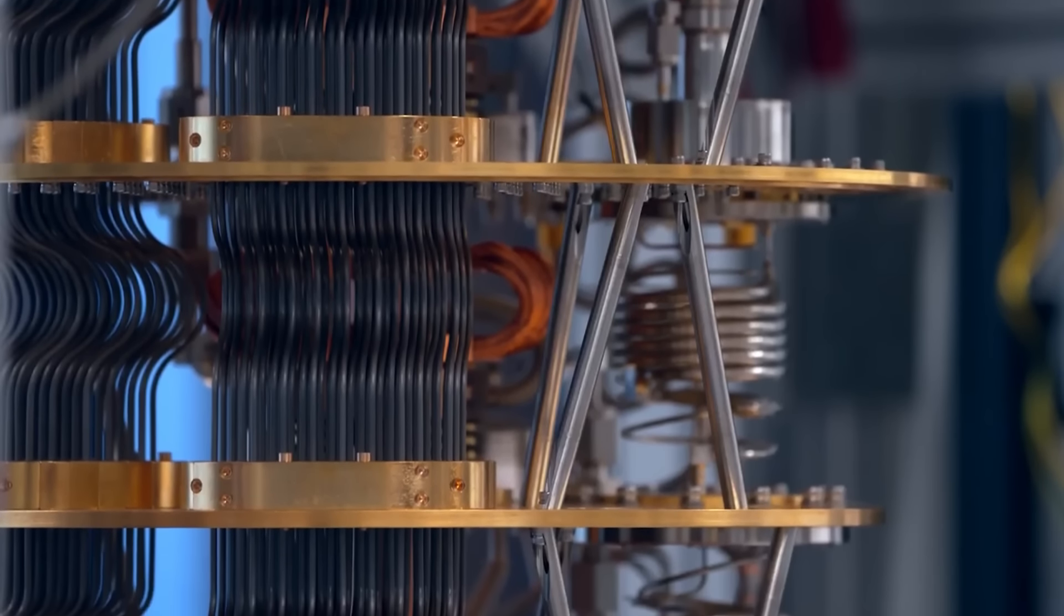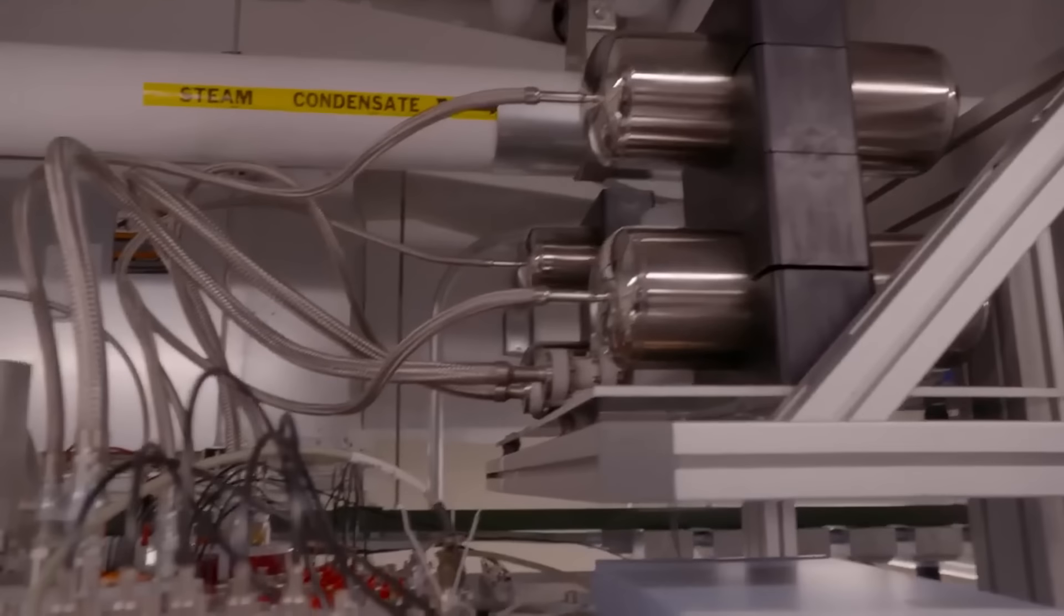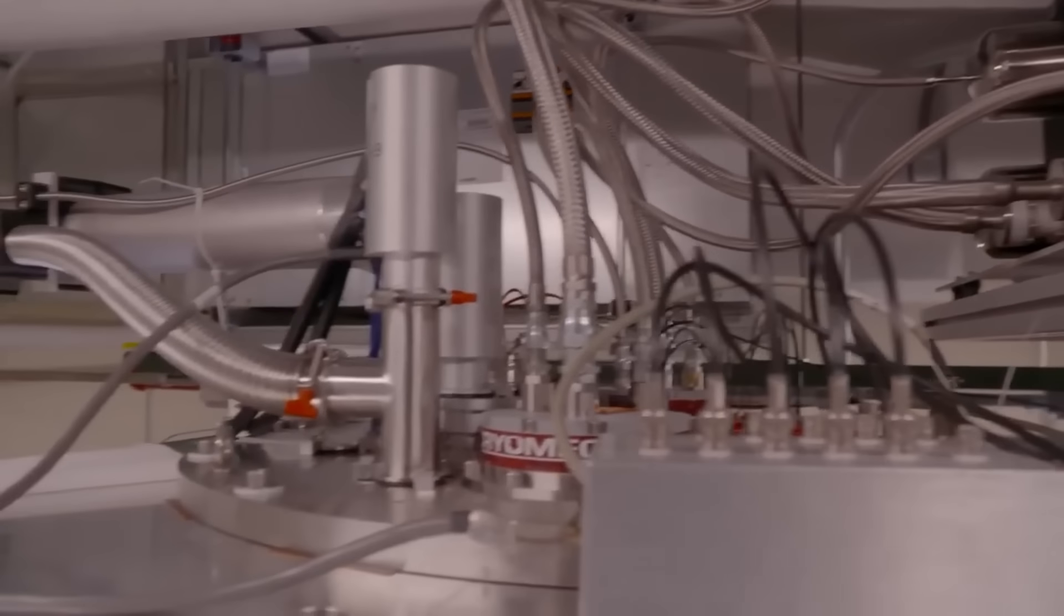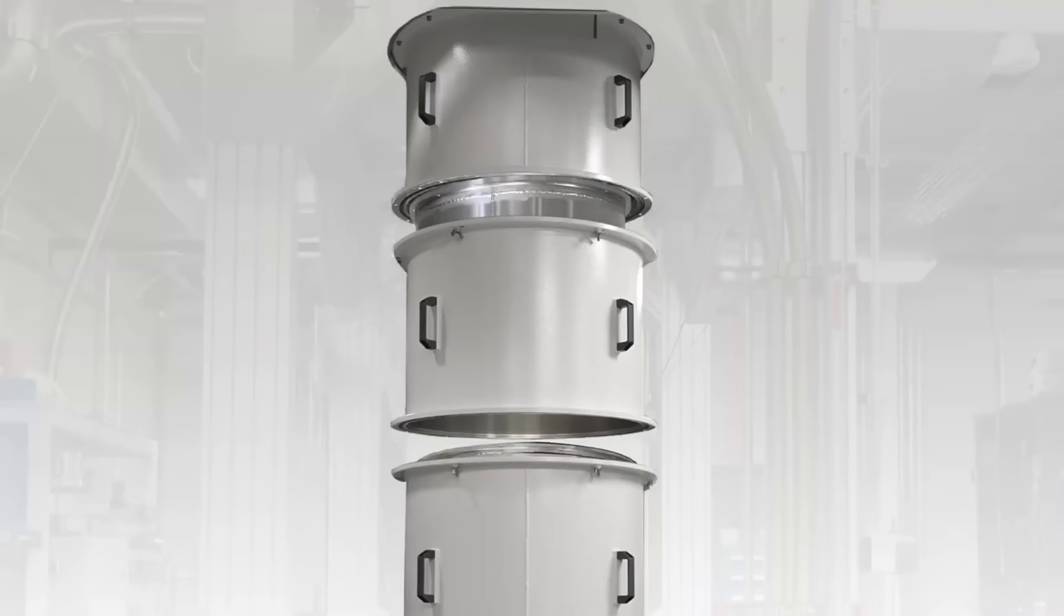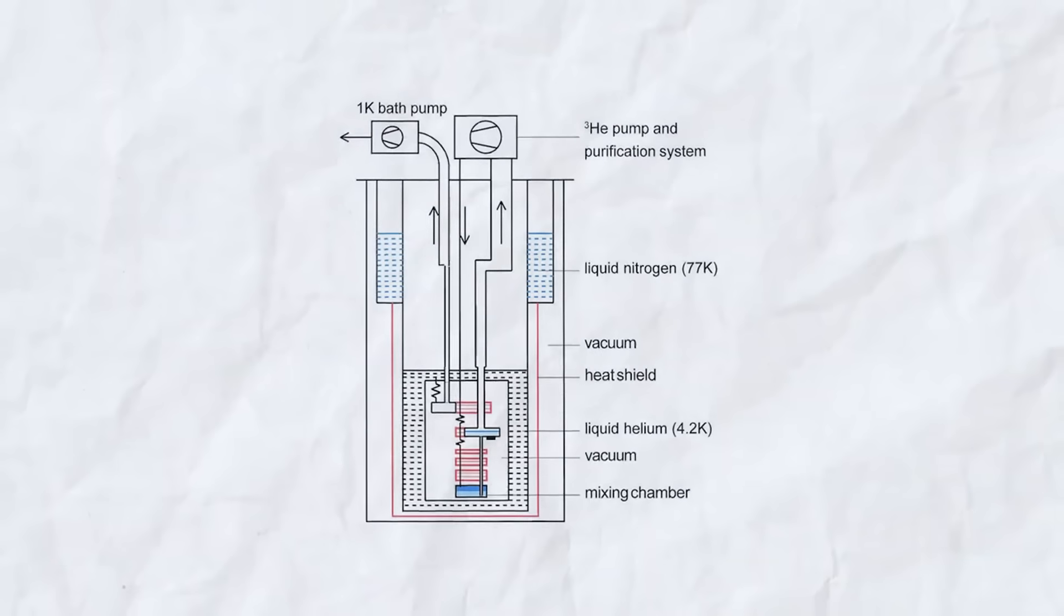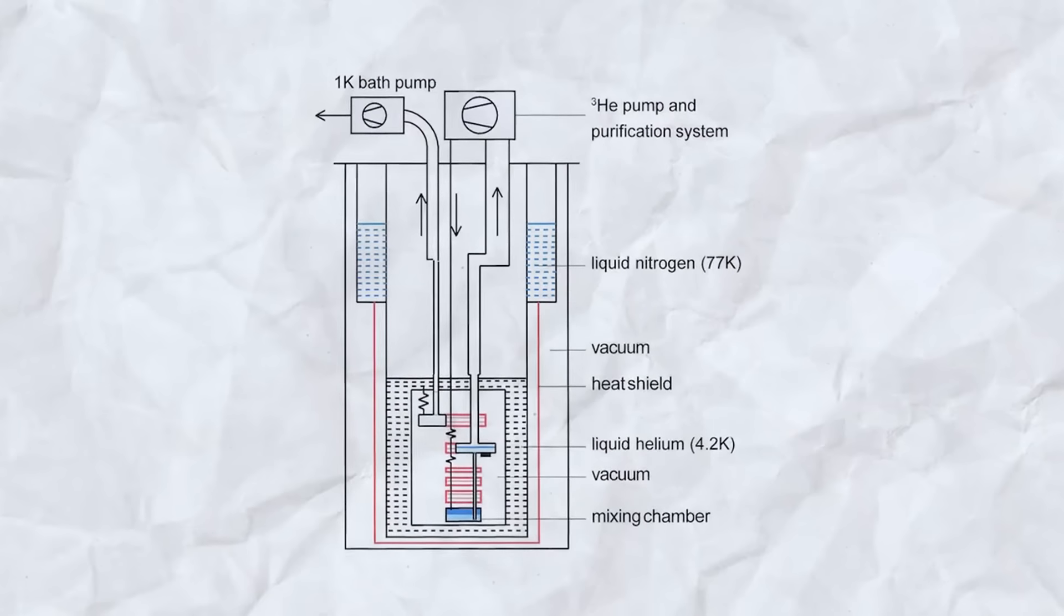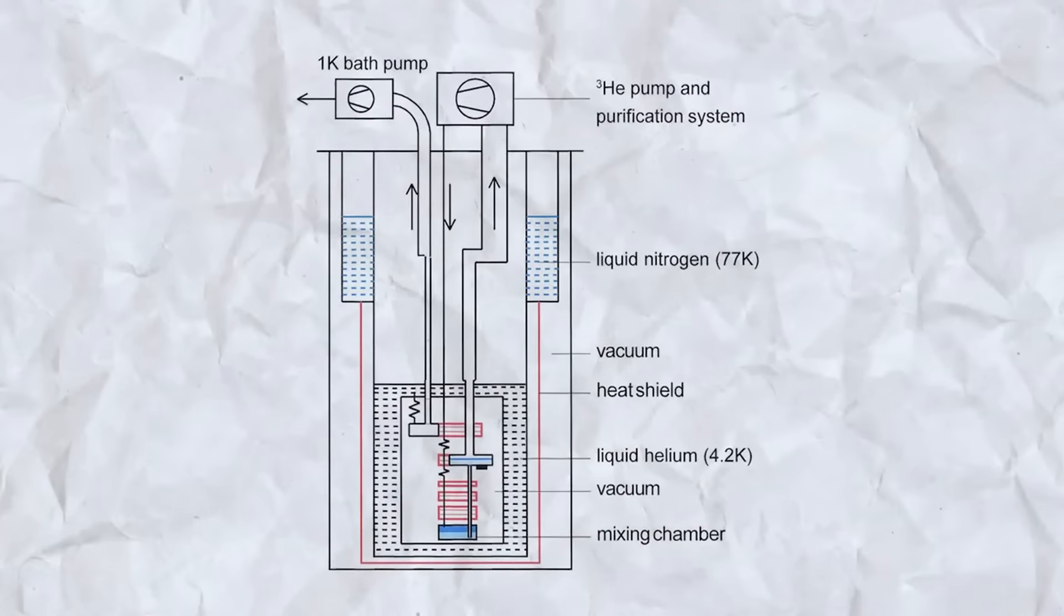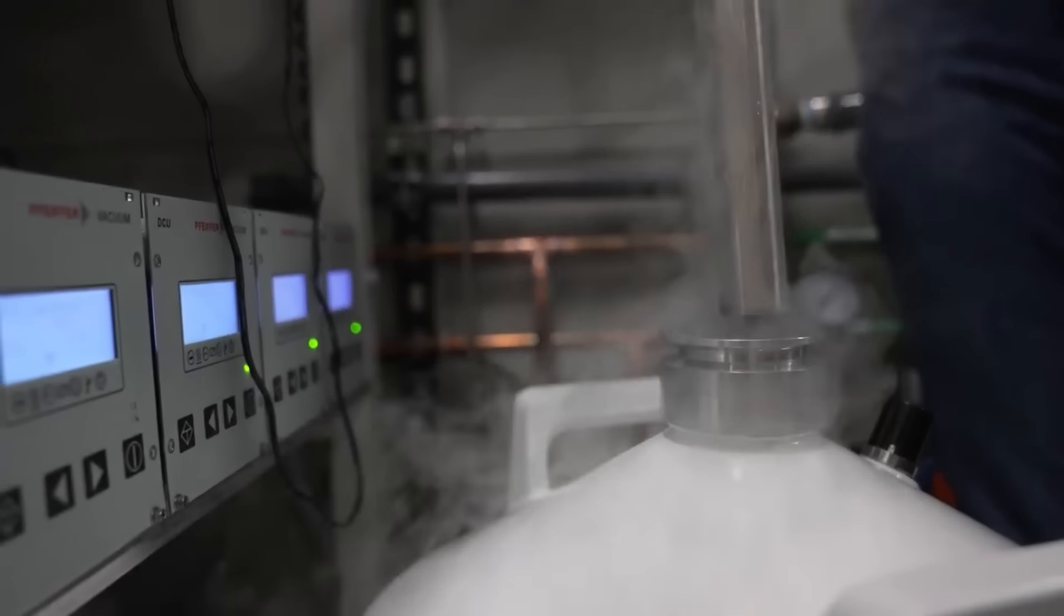Continuing our journey into the fascinating world of quantum computing with Google's Sycamore, let's dive into one of the most critical components of its operation. The cooling system. The heart of this system is something known as a dilution refrigerator. These are not your average refrigerators. They use a mixture of helium-3 and helium-4 isotopes to achieve temperatures close to absolute zero. That's less than 100 millikelvin or a chilling minus 273 Celsius.